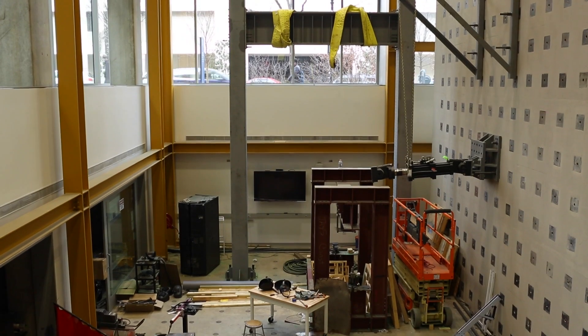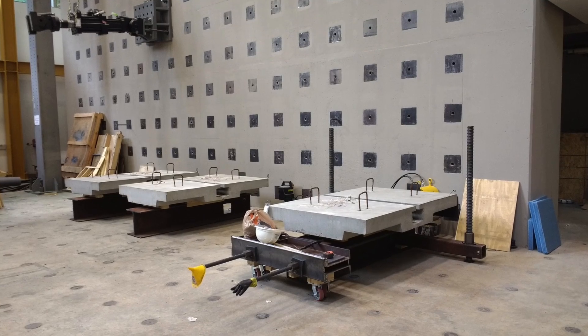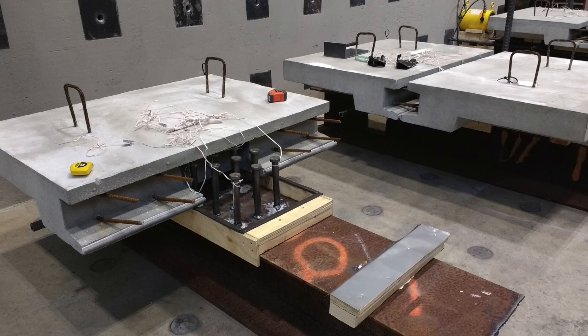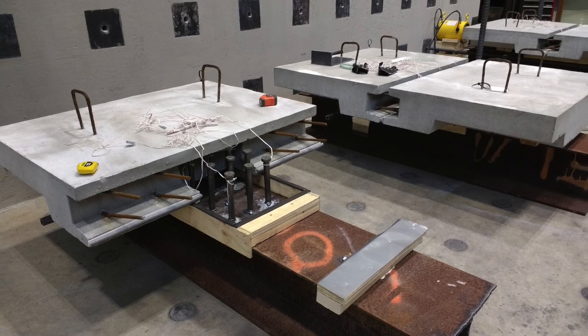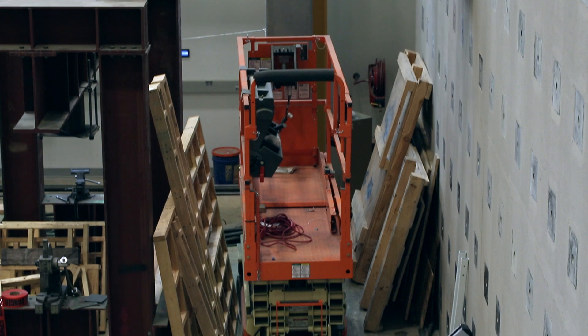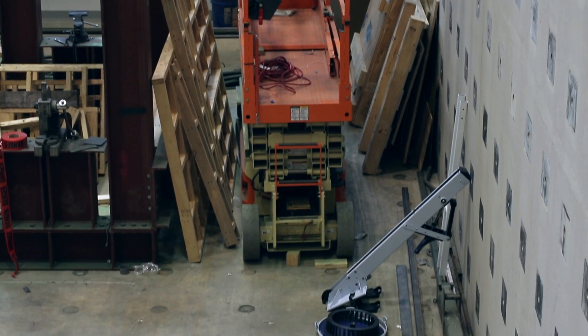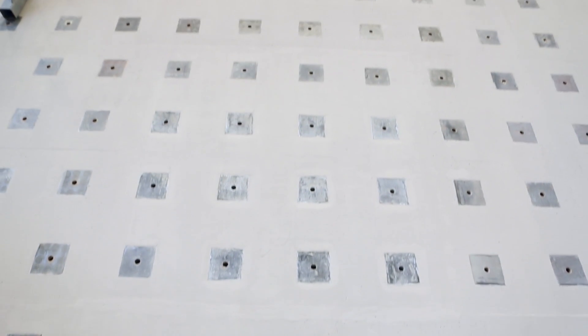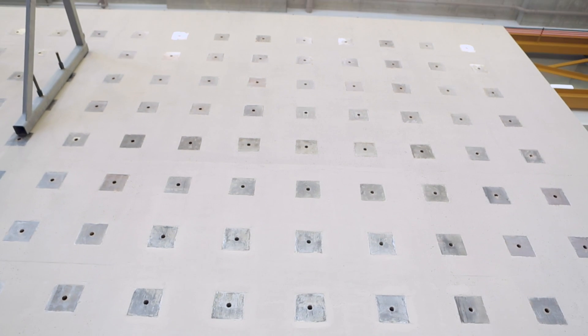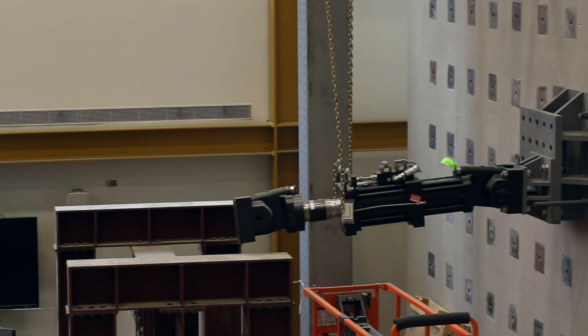The High Bay at GW enables the researchers to build and test large-scale assemblies of beams, columns, and slabs. The High Bay is equipped with a strong floor that can take up to one million pounds of tension force. It's also equipped with a strong wall that allows us to apply horizontal loads on our assemblies.